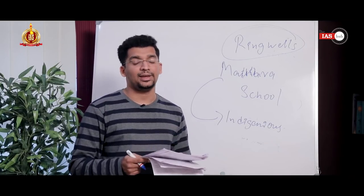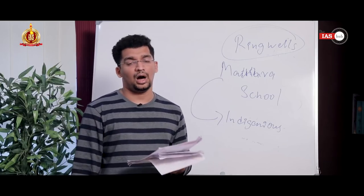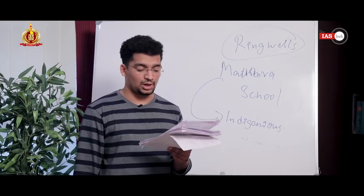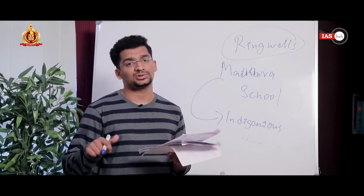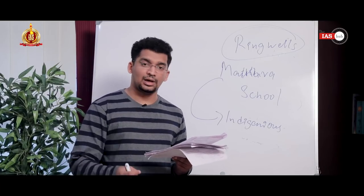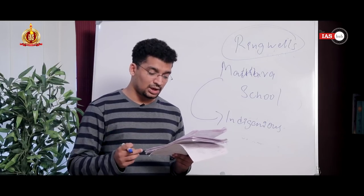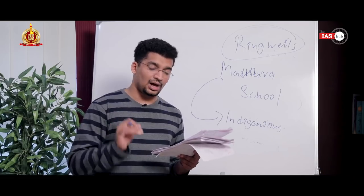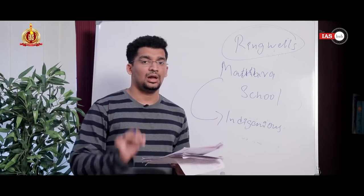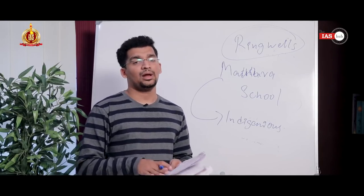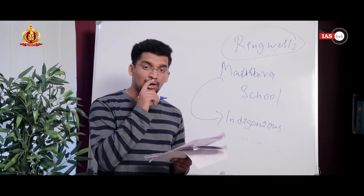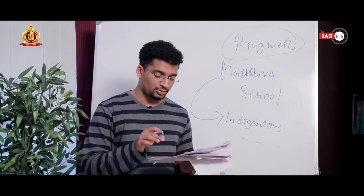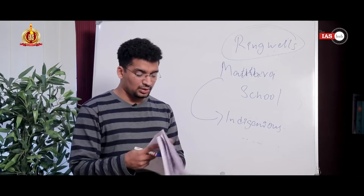Question twenty-one is a current affairs question about the Delhi-Mumbai Industrial Corridor. The question asks which states it passes through — options include UP, Madhya Pradesh, Haryana, and Gujarat. The corridor passes through six states: Uttar Pradesh, Haryana, Gujarat, Delhi, Rajasthan, and Maharashtra. Madhya Pradesh is not included. Statement two mentioning Madhya Pradesh is wrong; all other states mentioned are correct. The answer is C.